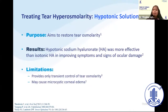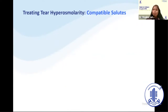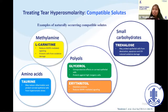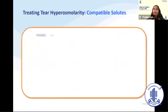After understanding the dry eye disease process, how do we treat it? The role of hypotonic solutions is transient — they provide relief, but only temporarily. What we need is to add compatible solutes, which are naturally occurring in our tear film, such as betaine, small carbohydrates like trehalose, polyols like glycerol and erythritol, and amino acids like taurine. All of these have been incorporated into drop form.